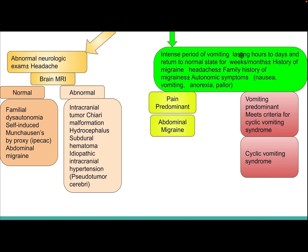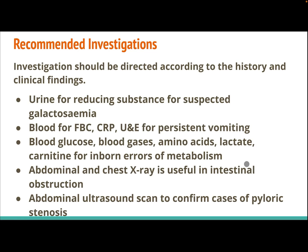If there are intense periods of vomiting lasting hours to two days, returning to normal state for weeks or months, with or without history of migraine headaches, family history of migraine, or autonomic symptoms like nausea, vomiting, anorexia, and pallor — if pain is predominant, this is abdominal migraine. If vomiting is predominant and meets criteria, this is cyclic vomiting syndrome.